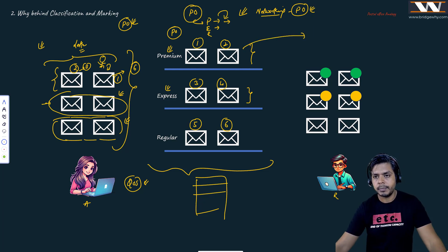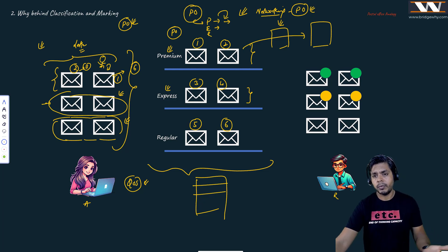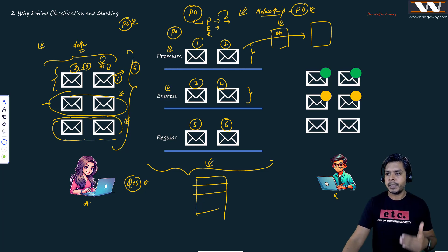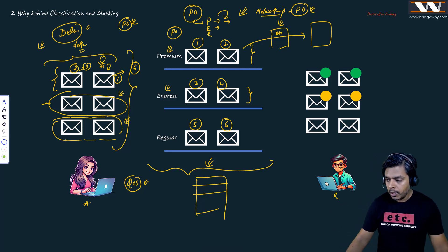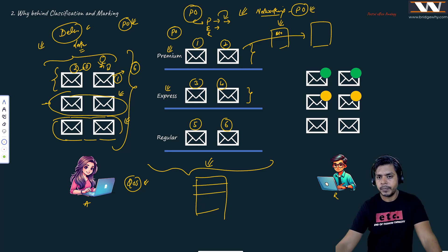Now the problem arises: the letter has been sorted in the Delhi postal office, but to reach Bombay it must pass through intermediate postal buildings — maybe in Haryana or Gujarat. The decision of premium, express, or regular was made at the originating building, but when the letter reaches a middle postal building, nobody there will understand whether the letter is premium, express, or regular, because nothing is marked on it.